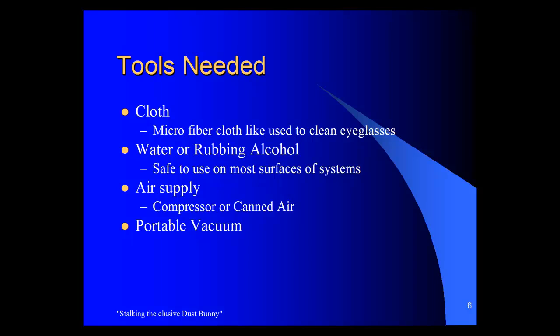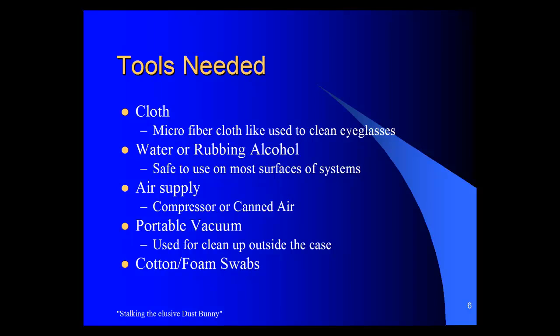A portable vacuum can be used to clean up the dust in the area around the computer when you're cleaning — especially as you blow the dust out, you can use the vacuum to clean the area around. The vacuum can be either a plug-in 110-volt or a battery-powered vacuum. Cotton or foam swabs can be used to clean in tight areas, such as between the fins of your cooling solution, the heat sink on your processor, the fan blades, or in the small tight openings and air vents on the machine.